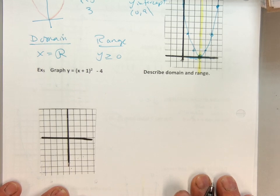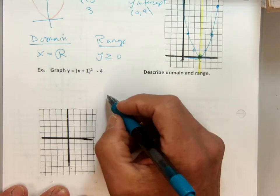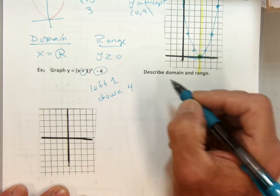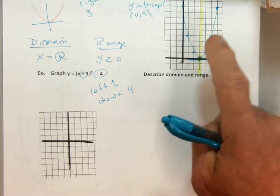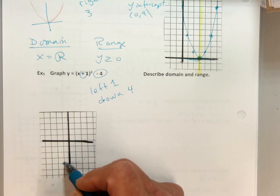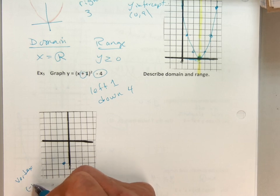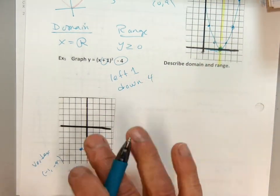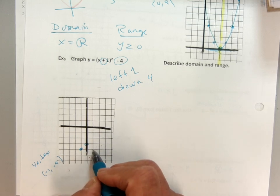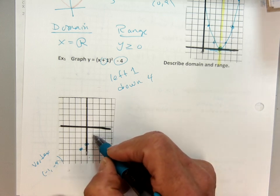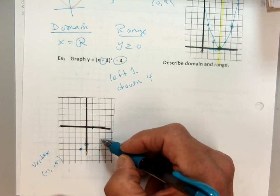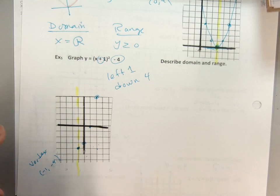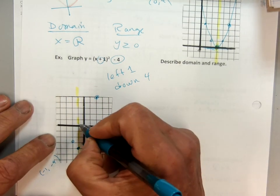Last example. We're going to take our parabola and move it to the left one and down four — just like we did with absolute values, translating our parent function. The vertex — that bottom point — is at negative one, negative four. From there we go over 1, up 1; over 2, 2 squared is 4, so up 4; over 3, 3 squared is 9, so up 9. It has a line of symmetry right down the middle, and we fold over to get the symmetric points.